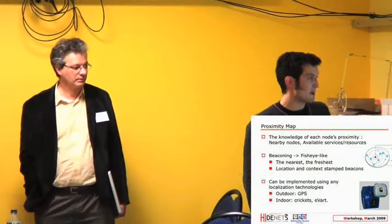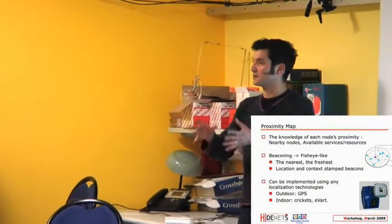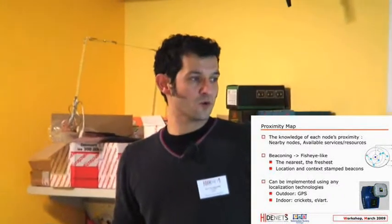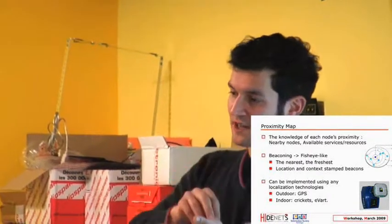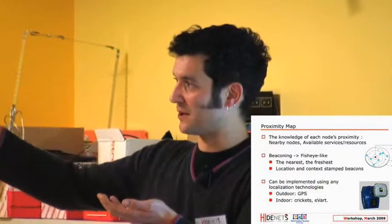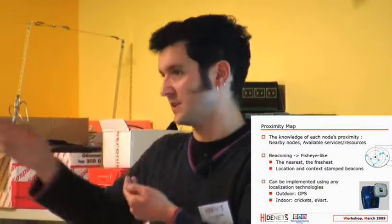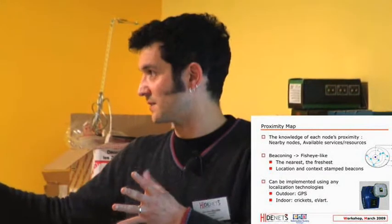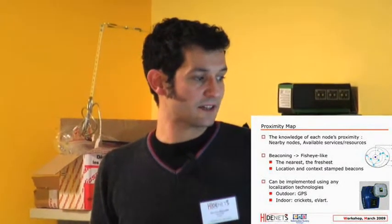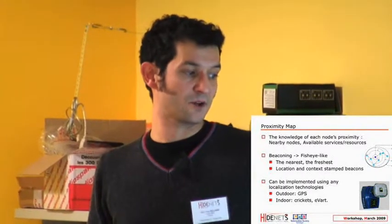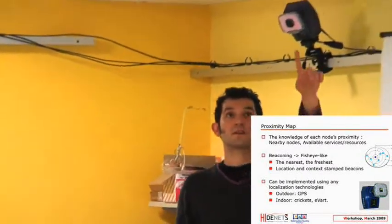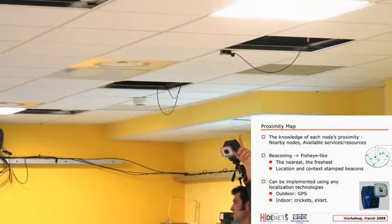The proximity map works by exchanging position or localization-stamped beacons. We begin with our own position but also with our knowledge of the neighbors, so that I also know about the vicinity of my neighbors. We can select the number of hops to extend this knowledge, and it can run using any kind of localization technology.